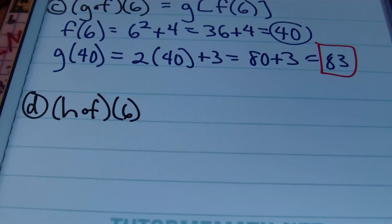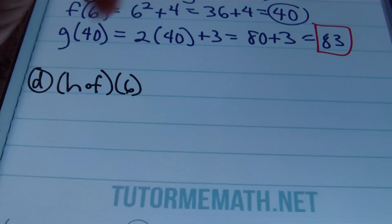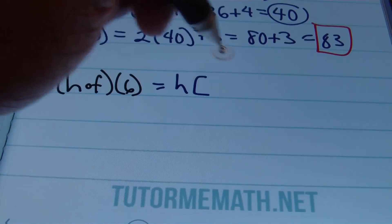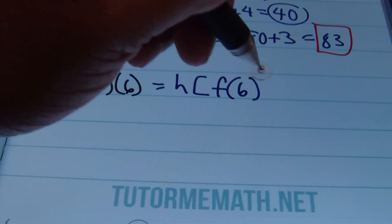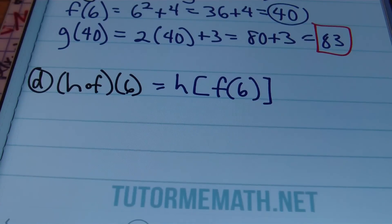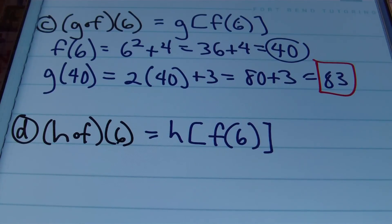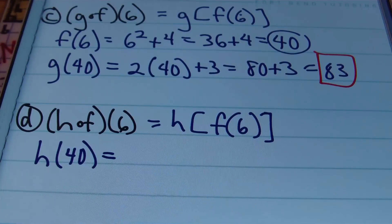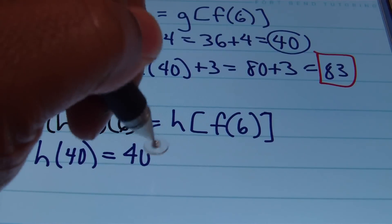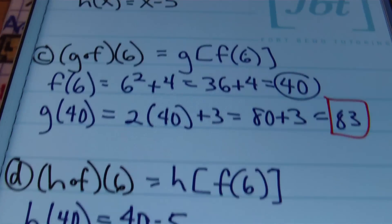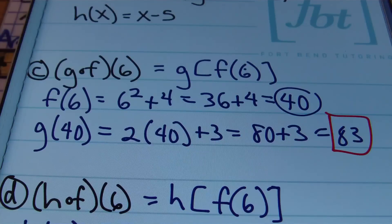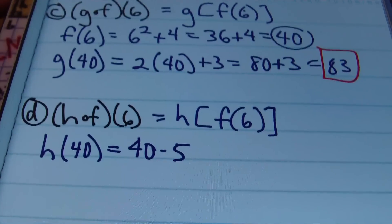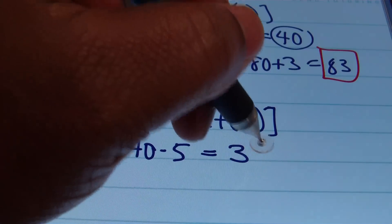In part D, we have H composite F of 6, meaning H of F of 6. We already know that F of 6 equals 40 — we just found that out. Therefore, we'll be plugging 40 into H. H of 40 gives us 40 minus 5. Remember H is X minus 5, so plugging in 40 where X is gives 40 minus 5, and 40 minus 5 is 35. That's the answer.